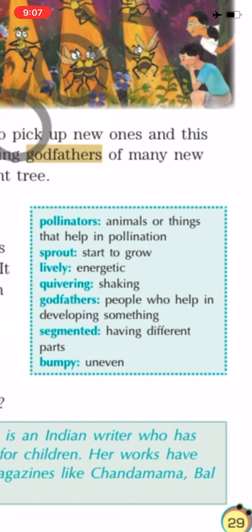Next word is 'lively' — lively means something full of energy, energetic, bubbly — जब बहुत ज़्यादा energy है. The next word is 'quivering' — quivering means shaking, continuously moving — जो हिलता ही रहता है, यानि कांपना. जो stable नहीं है.